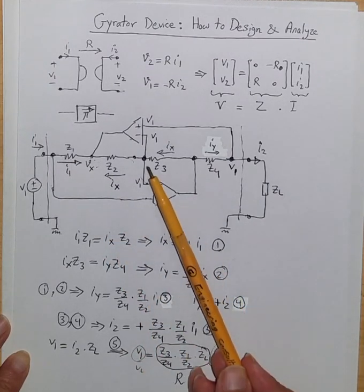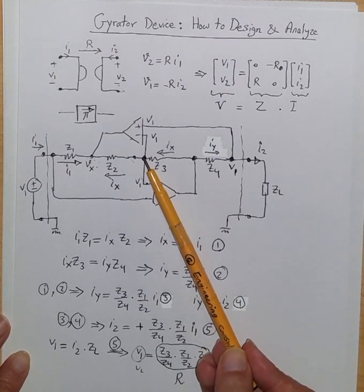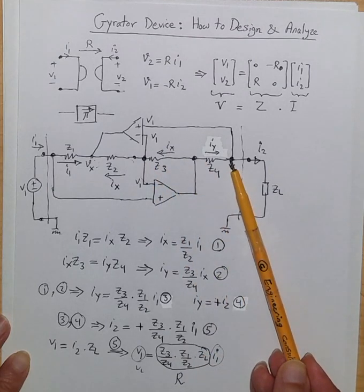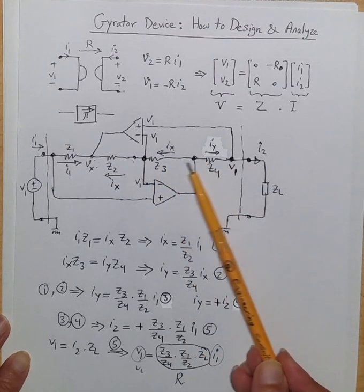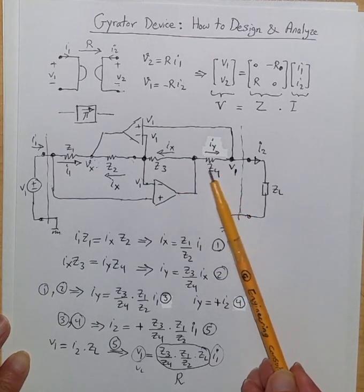So let's keep that. With the same argument, exactly the same reasoning, the voltage here is V1 and voltage here is V1. This voltage is common for these two impedances.